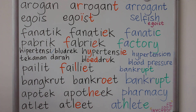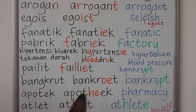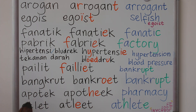Apothek. Atlet. With these words, there are at least two ways to pronounce them. 'Apothek' or 'apothek.' 'Atlet' or 'athlet.' Because in Dutch the vowel is 'a,' some people pronounce them differently and may even write the letter differently. But the correct and formal way, based on the Grand Dictionary of the Indonesian Language — KBBI — is the standard spelling.